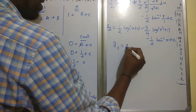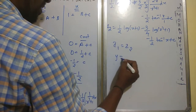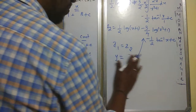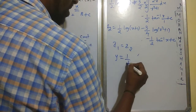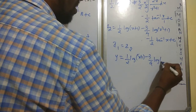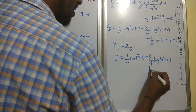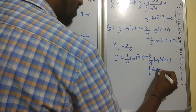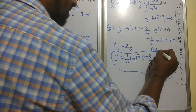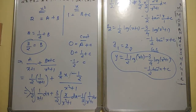Final answer: I1 = I2. So y = (1/2)log(x+1) - (3/4)log(x²+1) - (1/2)tan⁻¹(x) + C. If we leave this as is, it is the general solution. To find the particular solution, substitute the given x and y values, find C, then substitute C back.